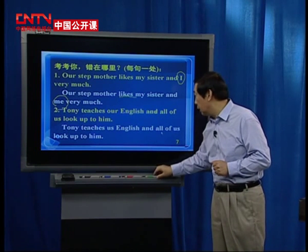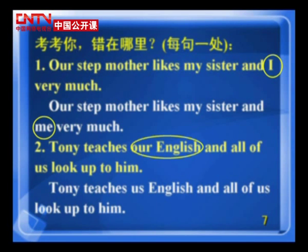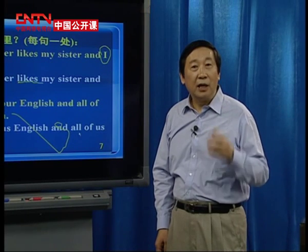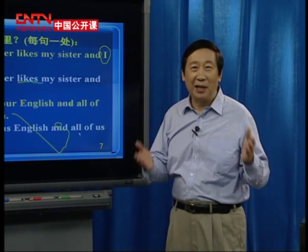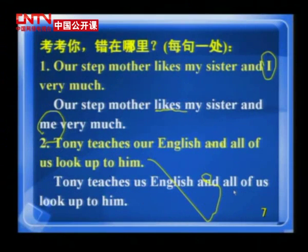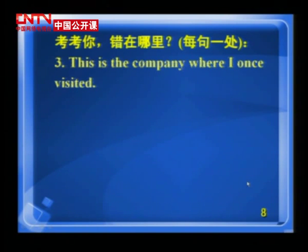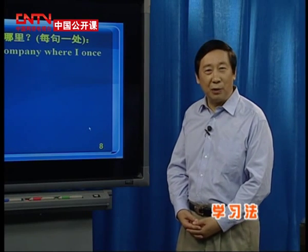代词有三个格：做主语的叫主格，做宾语的叫宾格，你的、我的、他的叫所有格。这儿教谁，教我们，应该是宾格 us，不是所有格 our。第三题：This is the company where I once visited. 错在哪？Visited 是及物动词，缺宾语，where 做的是状语。所以答案是：This is the company which/that I once visited.